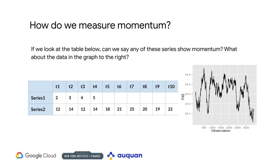Series one in the table on the left is monotonically increasing by the same amount each period. If these were an asset's price, we could say that the asset has upward momentum over the period. Series two is also increasing over the time period shown, but has decreases at times three, eight, and nine. Momentum is positive but not monotonic. The graph on the right shows FAS trading in a tight range over the time period shown — hard to see any momentum there.